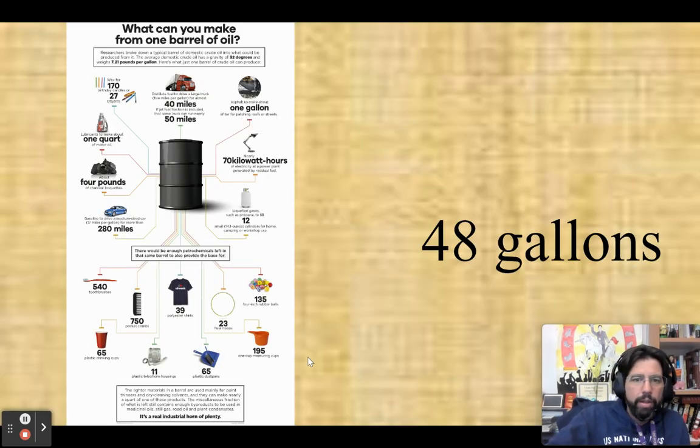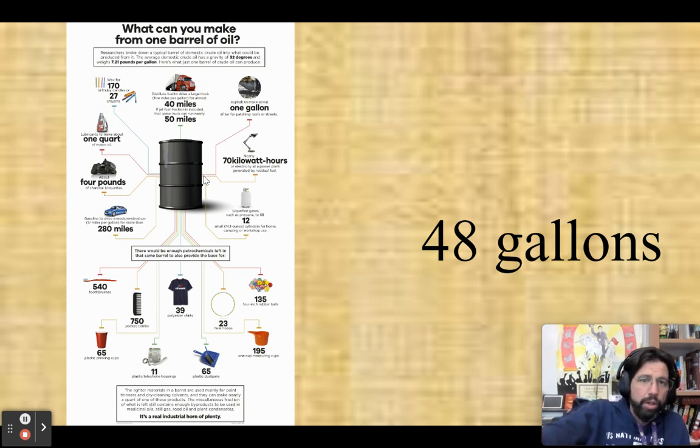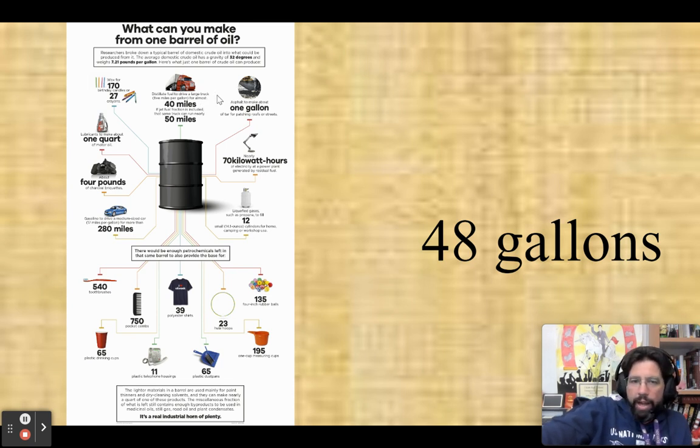Now let's put an example. This is oil. Oil is super desired around the world. Of course it powers energy and automobiles and trucks, but it also creates candles, lubricates things, toothbrushes, plastic cups, dust bins, measuring cups, little rubber balls, hula hoops, pharmaceuticals, polyester. All these different things are made out of petroleum. And a barrel of oil is how we measure oil by the barrel, and the barrel is about 48 gallons.